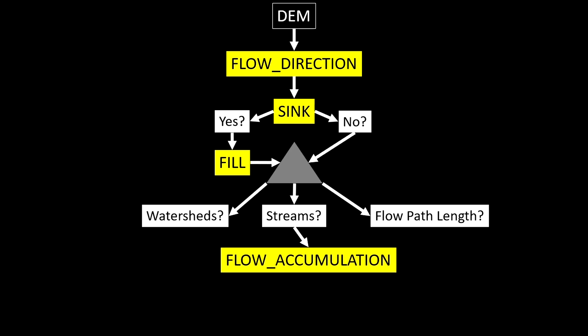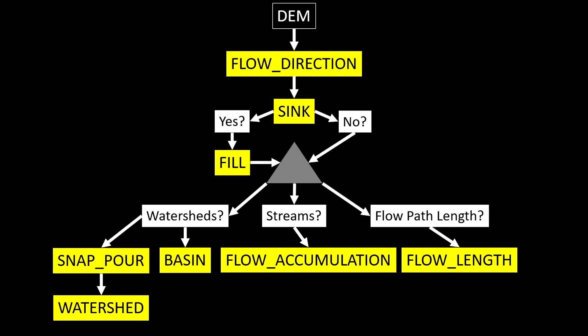From there, we'll do flow accumulation to identify the location of streams. We'll then use flow length to show the distance upstream or downstream that a particular pixel or cell is along a particular flow. We can also use our depressionless DEM to create watersheds and basins, which are regions that contain drainage networks within them. This flowchart shows how we'll work through the various steps in this module and the future exercise.